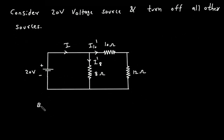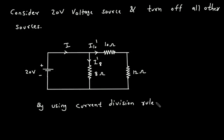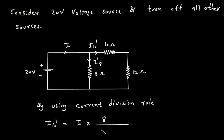By using the current division rule, I10 prime is equal to total current I multiplied by the parallel branch resistance. The 10 ohm and 12 ohm are in series, so the parallel resistance to that combination is 8 ohm. Therefore, I10 prime = I × 8 divided by (8 + 10 + 12). To find I10 prime, we need to find the total current I.